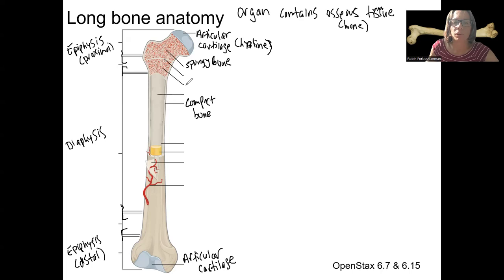In the spongy bone, there is red bone marrow. This is important for red blood cell and white blood cell. Sorry, all blood cell production. It's easier to remember red blood cell because it's red, but there's also white blood cells that are formed there. In adults, red bone marrow is only located in those epiphyses, those ends.